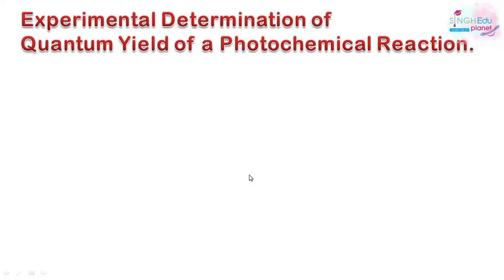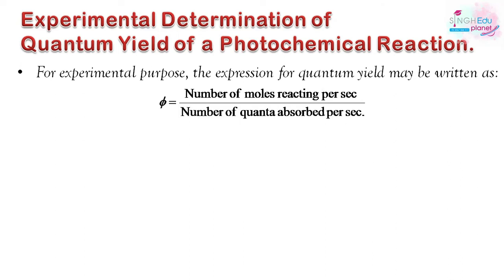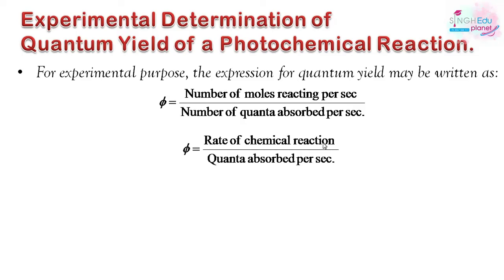Next is the experimental determination of quantum yield of a photochemical reaction. The expression for quantum yield is: φ = number of moles reacting per second divided by number of quanta absorbed per second, which equals the rate of chemical reaction divided by quanta absorbed per second.